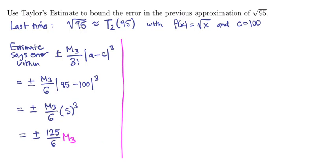Remember, the definition is that m3 is the maximum value of the absolute value, or a maximum value of plus or minus the third derivative of the function over the interval between the center and the point of approximation. So over the interval from 95 to 100.